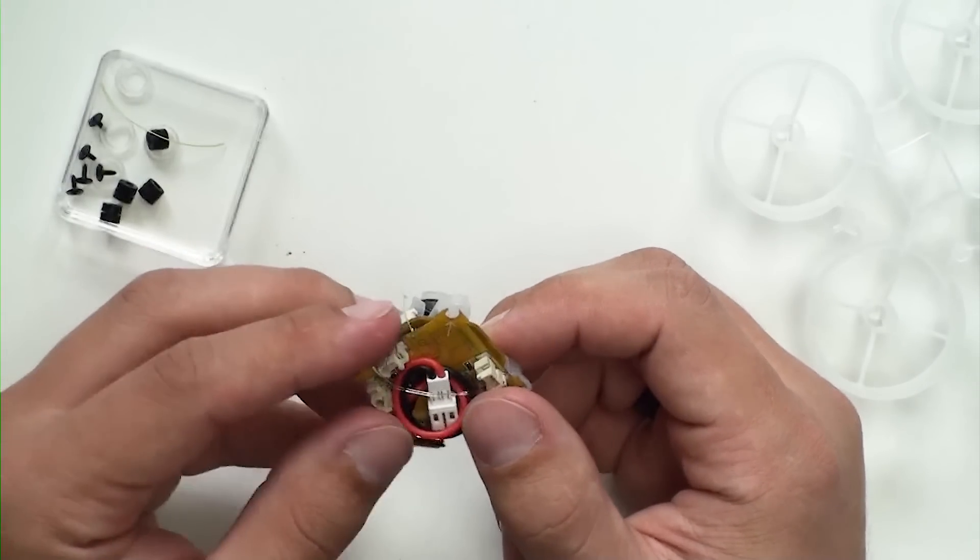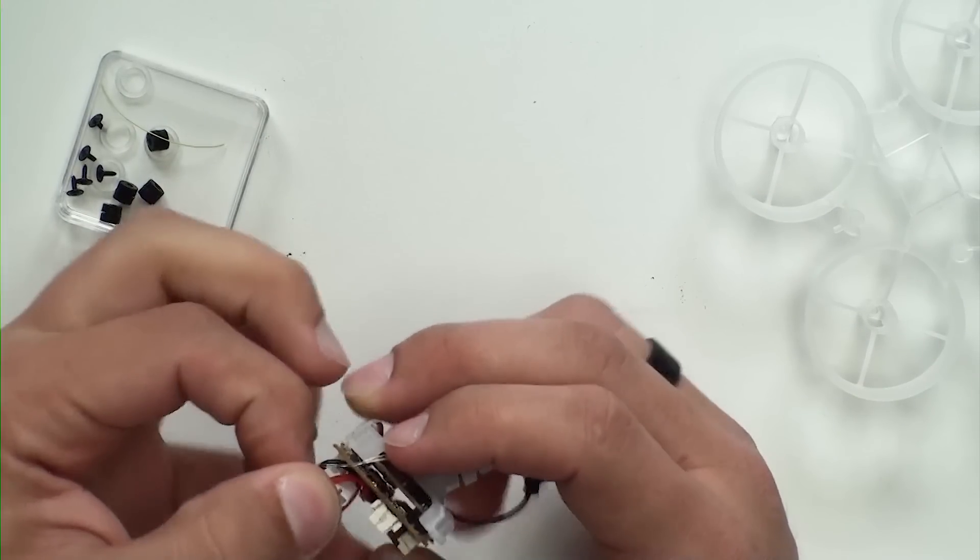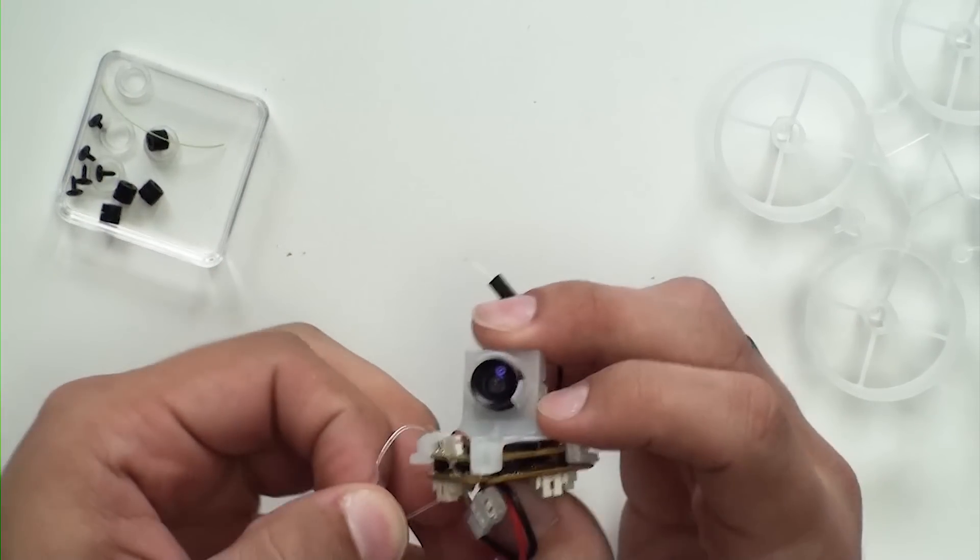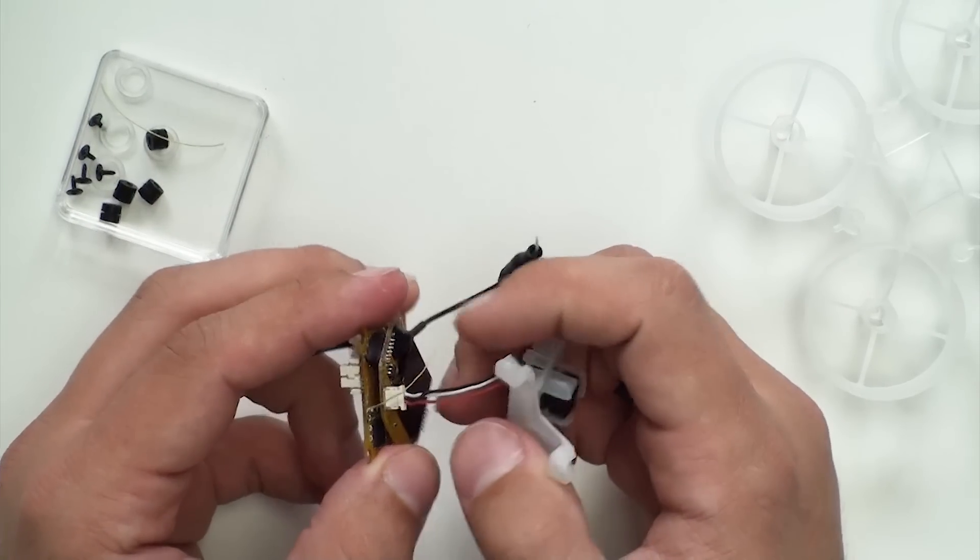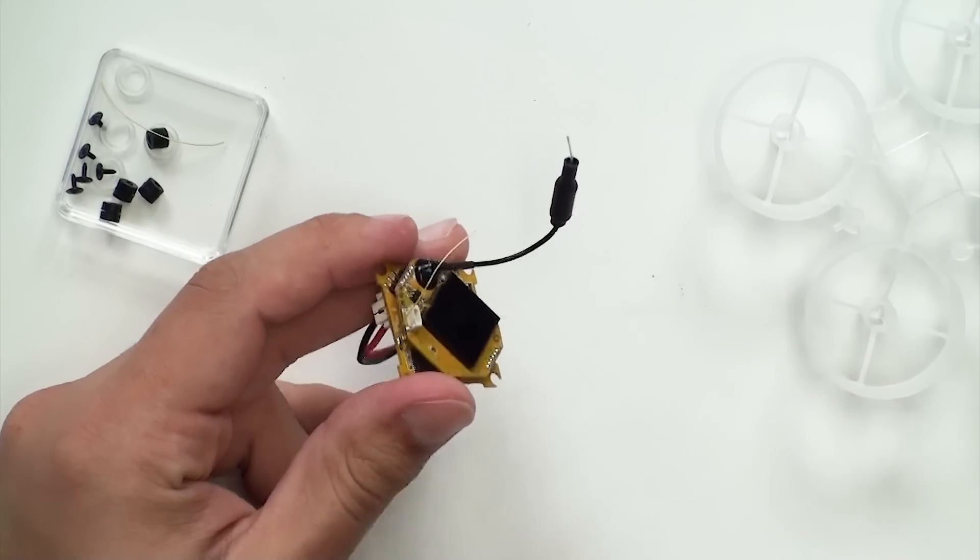The flight controller will have a rubber band around the whole set holding it together for shipping. Go ahead and remove that. Once you have that out, I like to unplug the camera at this time so it's easier to install the flight controller board.